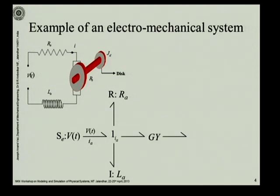We have the electromechanical action given by this gyrator. And we have the inertia on the mechanical side. That is rotary inertia. So, the angular momentum of this disc is going to change.